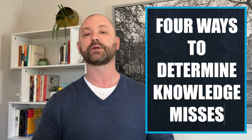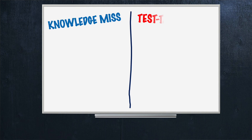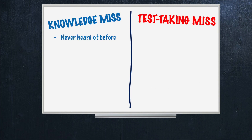So here are four ways we can tell if it's a knowledge miss. Number one, we might say, okay, I've never heard of this before — that's a pretty obvious knowledge miss. Or number two, a closely related response: I've seen this somewhere before, but I don't know what it is. Essentially the same issue.